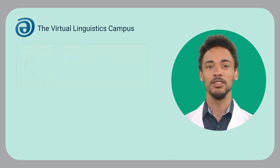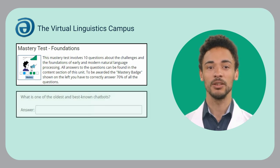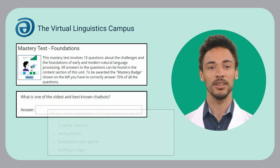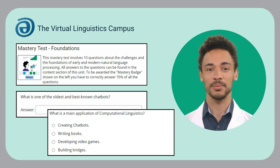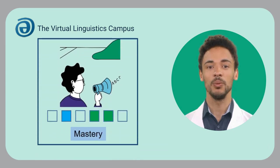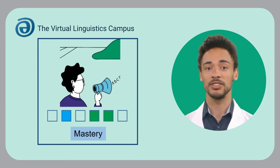The mastery test of this unit involves 10 questions about the challenges and the foundations of early and modern natural language processing. To be awarded the mastery badge shown on my right, you have to correctly answer 70% of all the questions.